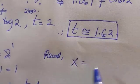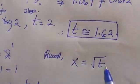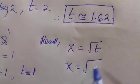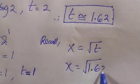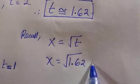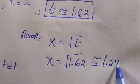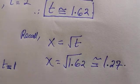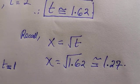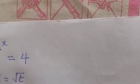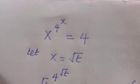And if you recall that x equals root t, which is the x that you are looking for, so we have x equals root of 1.62. This also has an approximate value of 1.27. So 1.27 is the approximate solution to our given problem which is x to the power of 4 to the power x.